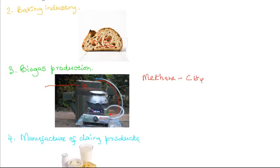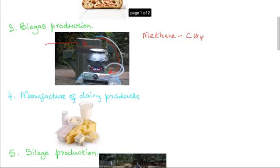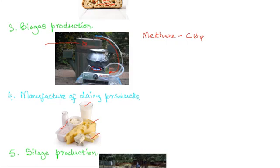Methane burns with a blue flame, thereby providing an important source of fuel for cooking. A further application is in the manufacturing of dairy products. Many dairy products, such as yogurt, cheese, butter, and sour milk, are produced as a result of anaerobic respiration. Certain bacteria act on fresh milk and convert it into the various products as shown in this photograph.